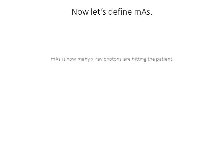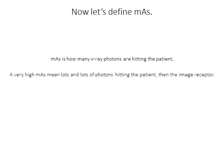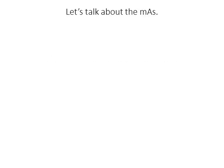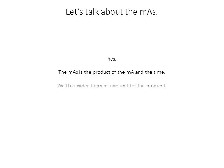MAS is quite literally just the number of photons hitting the patient — it's the product of the number of photons per unit of time multiplied by the time, that is the mA times the time. A very high MAS means lots of photons hitting the patient and then the image receptor. So the higher the MAS, the more photons hitting the image. Unless we have unusual circumstances, we're going to consider mA and time as one unit for the moment.